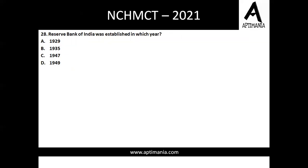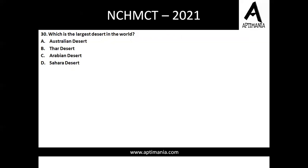Question twenty-eight: the Reserve Bank of India was established in which year? The answer is 1935, the year when RBI was established. Question twenty-nine: which is the longest national highway in the country? NH44 is the correct answer. Question thirty: which is the largest desert in the world? Sahara Desert.